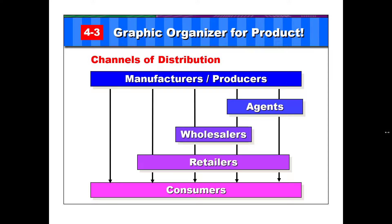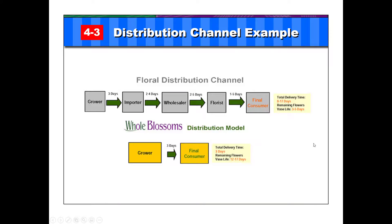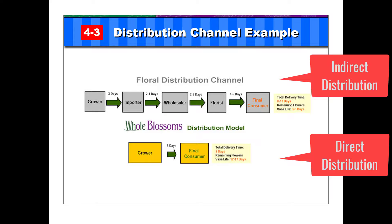In the next example, this is an actual floral distribution channel. On the top, we've got indirect distribution where the grower goes to a person who imports the floral, then that gets sold to a floral wholesaler. The wholesaler sells to the florist, which is a retailer, and the florist sells to the final consumer. Flowers could also follow a direct distribution, where the grower just sells directly to the customer.